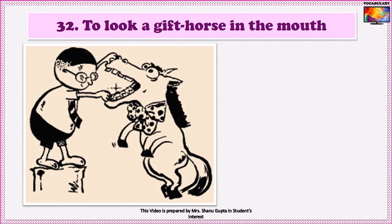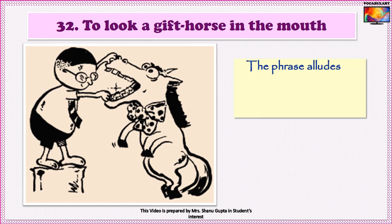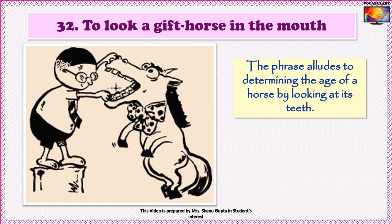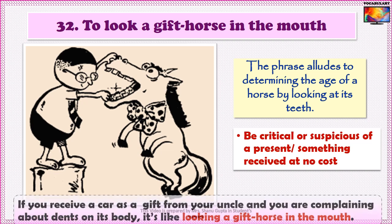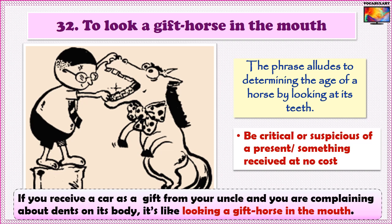Idiom number 32 is To look a gift horse in the mouth. This phrase alludes to determining the age of a horse by looking at its teeth. So it is used for someone who is being critical or suspicious of something received at no cost. For example: Imagine that you received a car as a gift from your uncle and you are complaining about dents on its body — it's like looking a gift horse in the mouth.